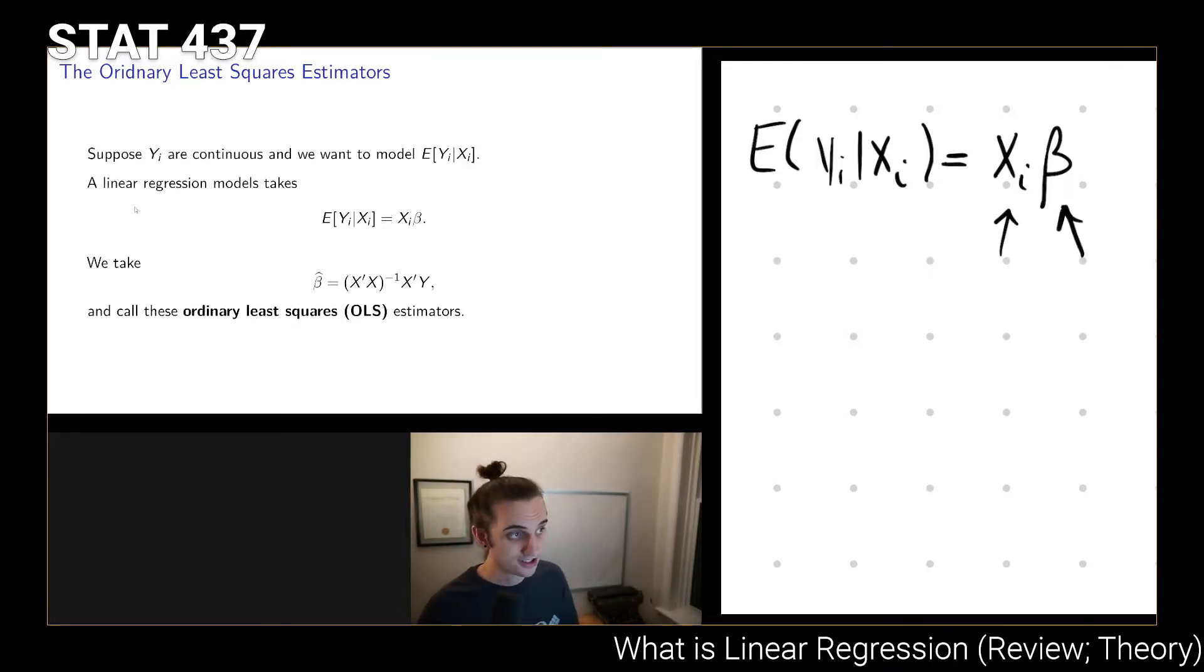If we've selected their dimensions correctly, then we might take Xi to be a row vector, so it's going to be 1 by p, then beta is p by 1, and that gives us our 1 by 1 outcome.